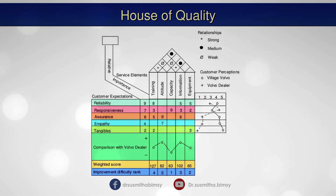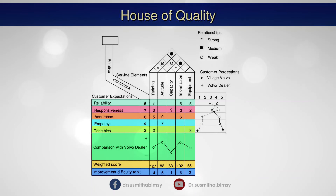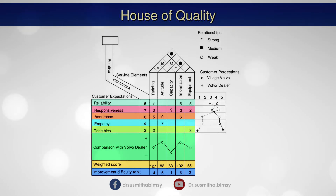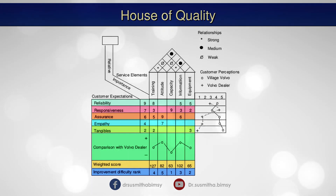Next is competitive assessment. Two areas of the house show comparisons of Village Volvo with a competing Volvo dealership. On the right are shown comparisons on the dimensions of service quality, and just above the floor of the house are shown relative ratings comparing Village Volvo with the competing dealership on the elements of service. The house of service quality is now complete and can be used to make preliminary service design decisions. It would appear that training would be a good investment: it has the strongest weighted score, is rated relatively weak compared to competition, and is relatively less difficult to change.